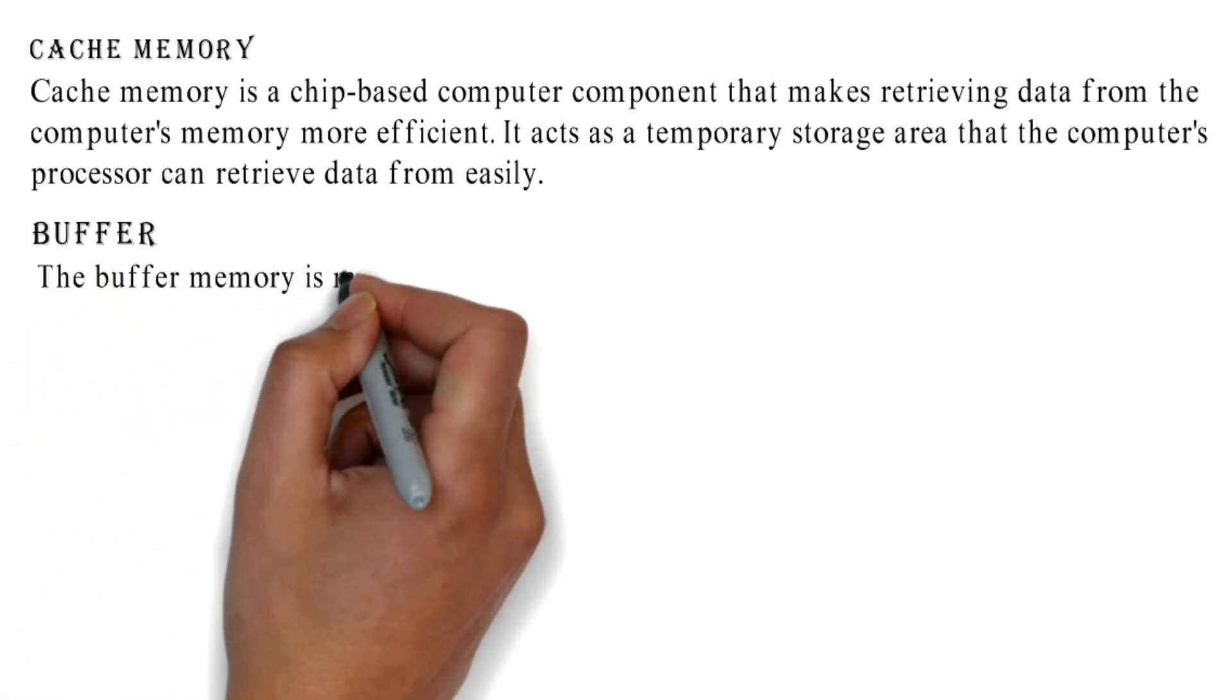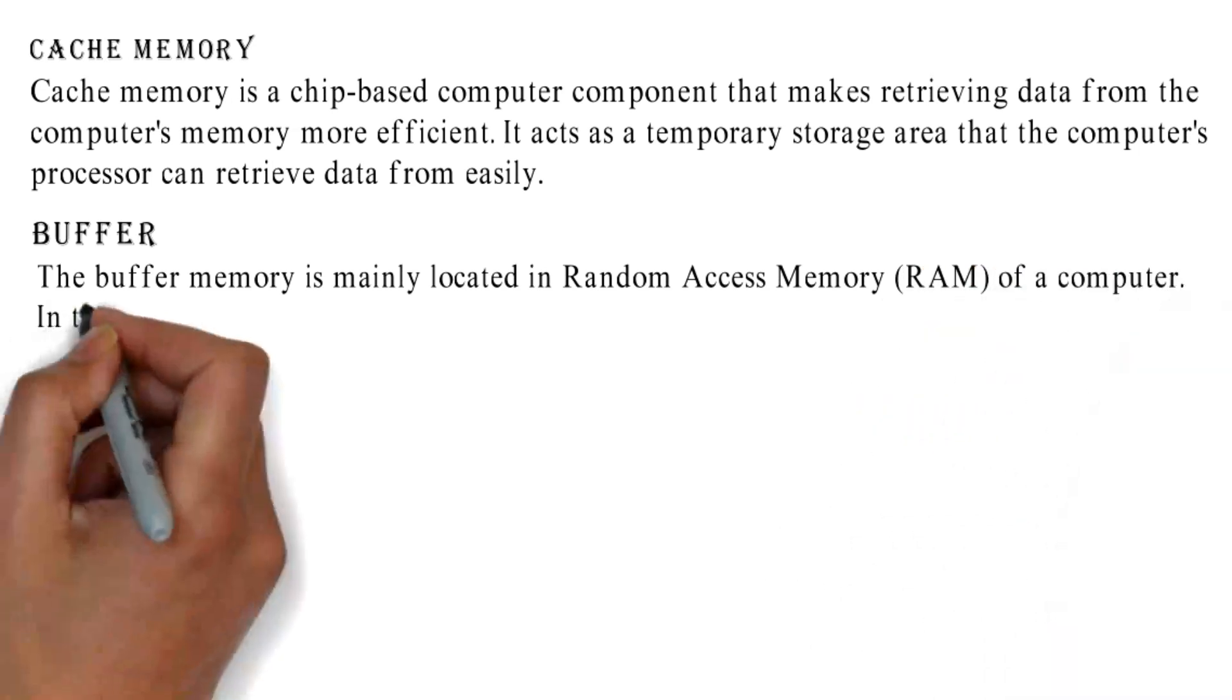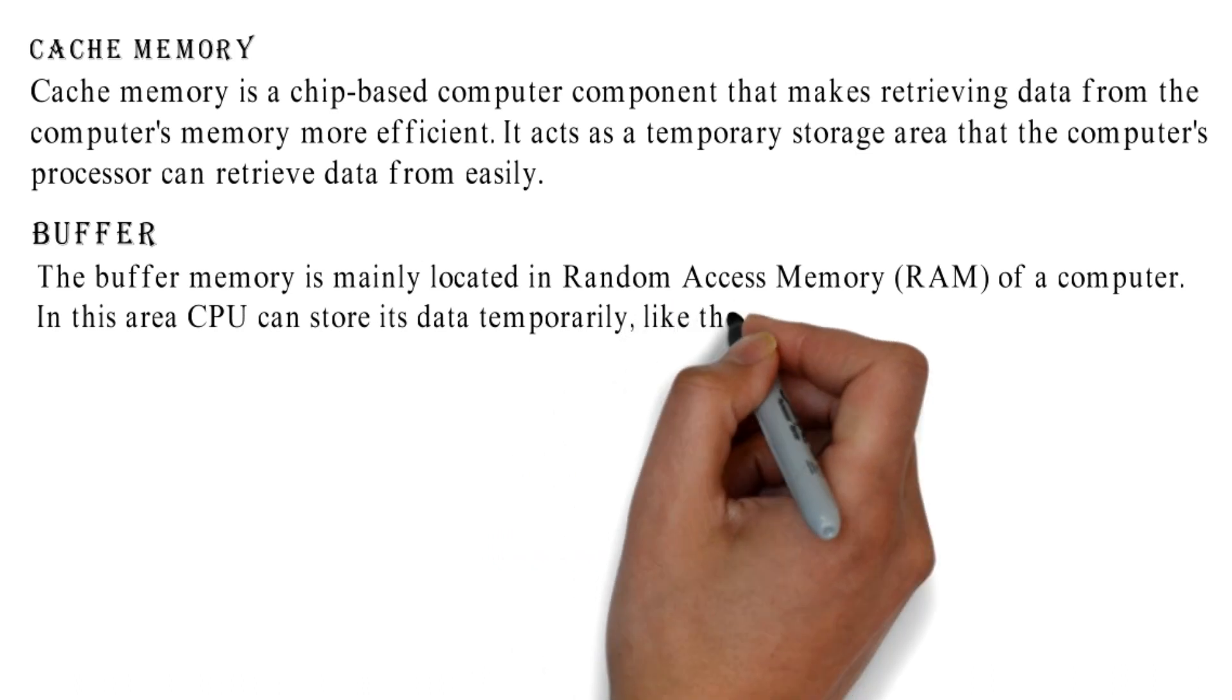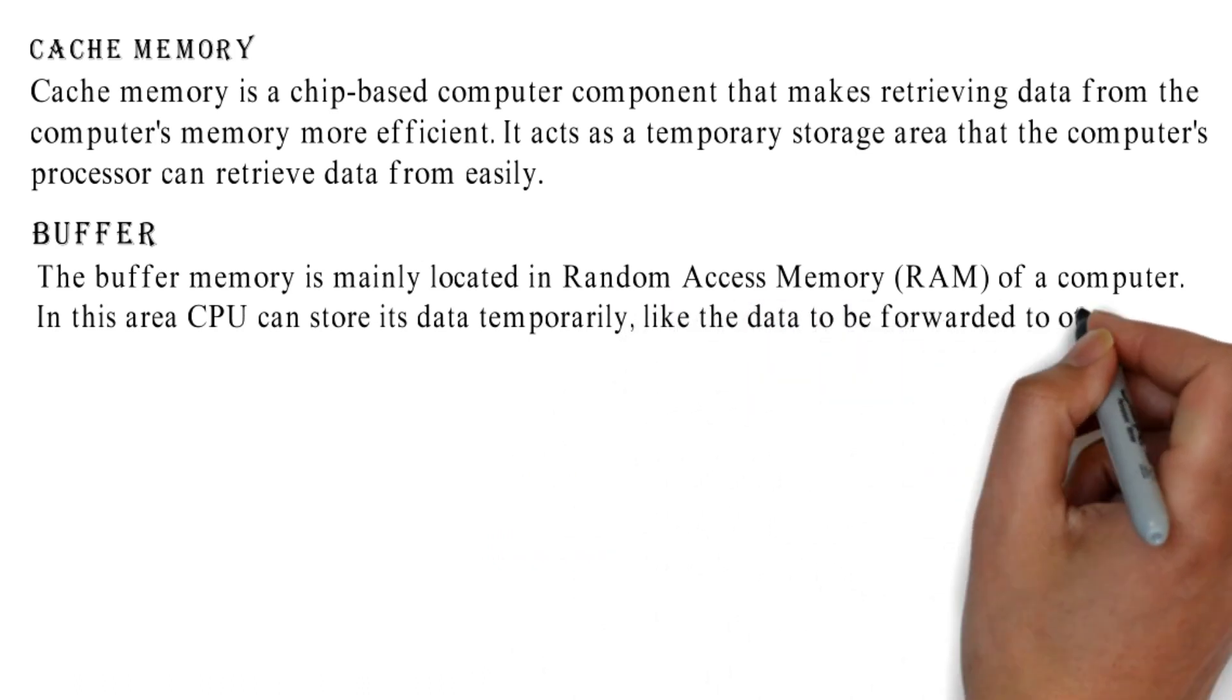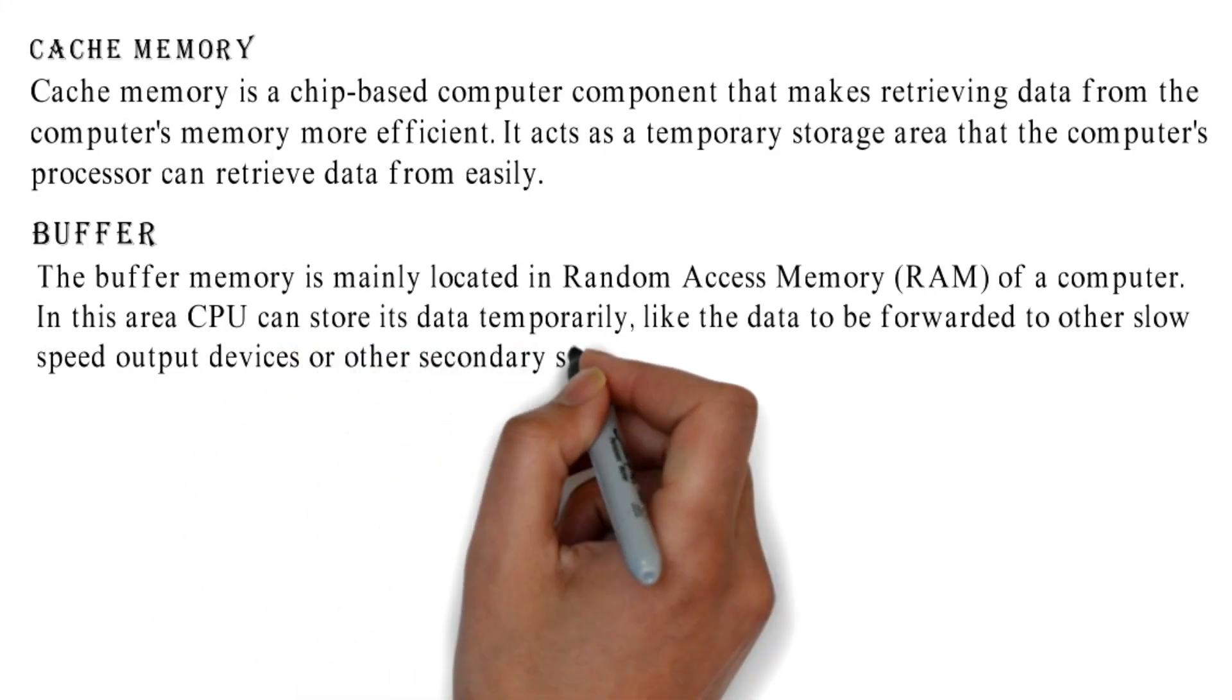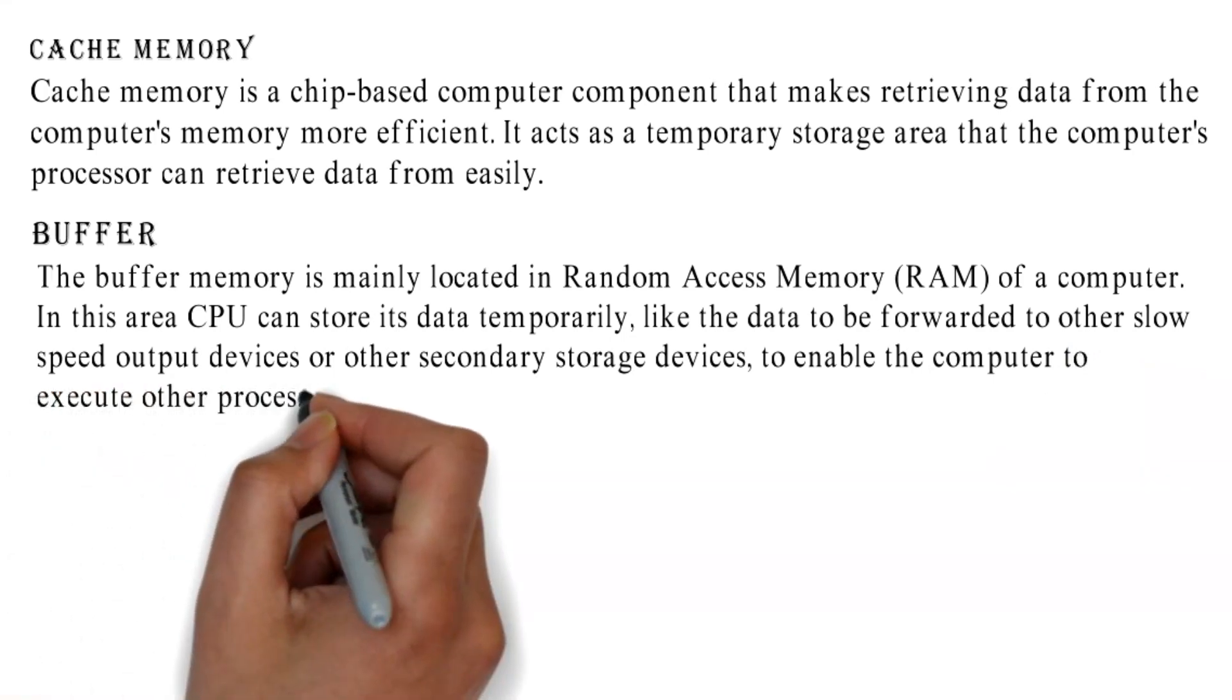Buffer: The buffer memory is mainly located in random access memory of a computer. In this area, CPU can store its data temporarily, like the data to be forwarded to other slow-speed output devices or other secondary storage devices, to enable the computer to execute other processes.